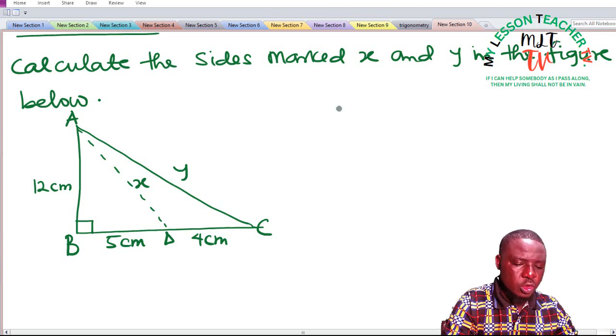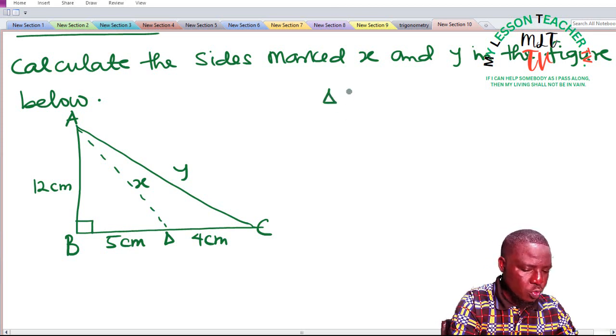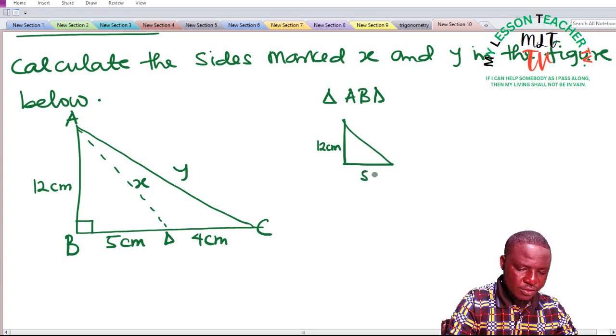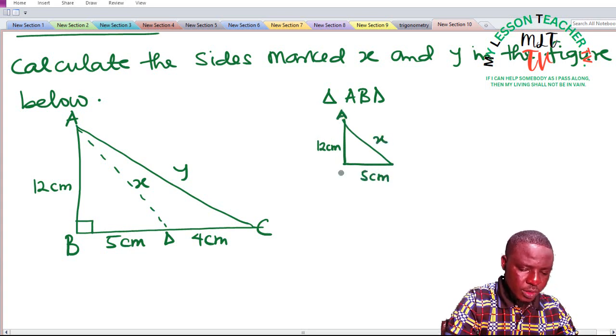So if you consider triangle ABD, which is this, if I should sketch it out we have triangle ABD to be: this is 12 centimeters, this is 5 centimeters, and this is x. This is ABD.